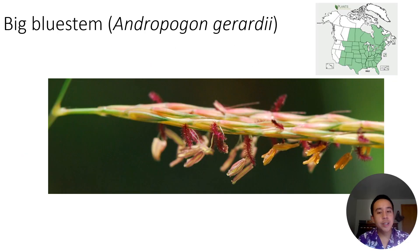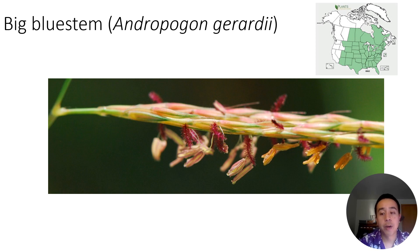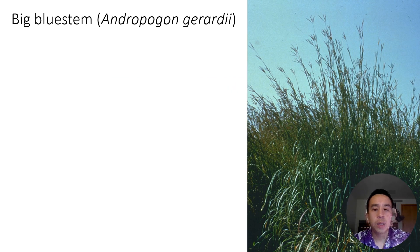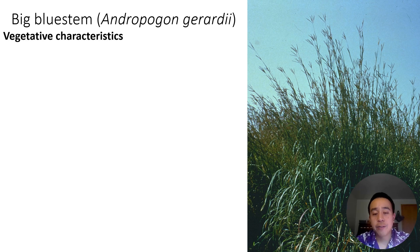Here is another close-up photo of a big bluestem flower — just a reminder, grasses have flowers. In the upper corner you can see the distribution of big bluestem across North America. We're going to go through a few characteristics on the next slide, so feel free to pause as needed because there'll be a lot of material.